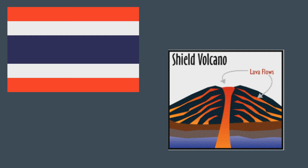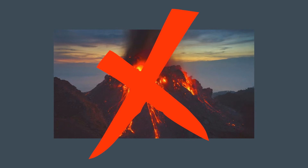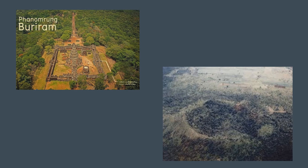In Thailand, there used to be a lot of volcanoes but they are all inactive now, and most of them are shield volcanoes. We are happy to say that Thailand is safe from volcanic disaster — if there is an eruption, it's not going to be a big one, and if something happens, it may be an earthquake rather than an eruption. These two volcanoes are in Thailand: the first is Hin Phnom Rung volcano and the second is Hin Lut volcano, both located in Buriram. Thank you for listening and hope you enjoyed this presentation.